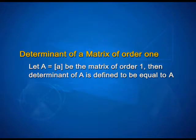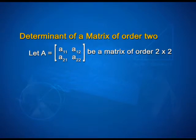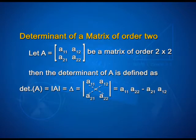Now, let us look at determinants of a matrix of order 1. Let A be a matrix of order 1, then determinant of A is defined to be equal to A. For a matrix of order 2: let A = [A11 A12; A21 A22], then the determinant of A is defined as det(A) = delta = A11*A22 minus A21*A12.